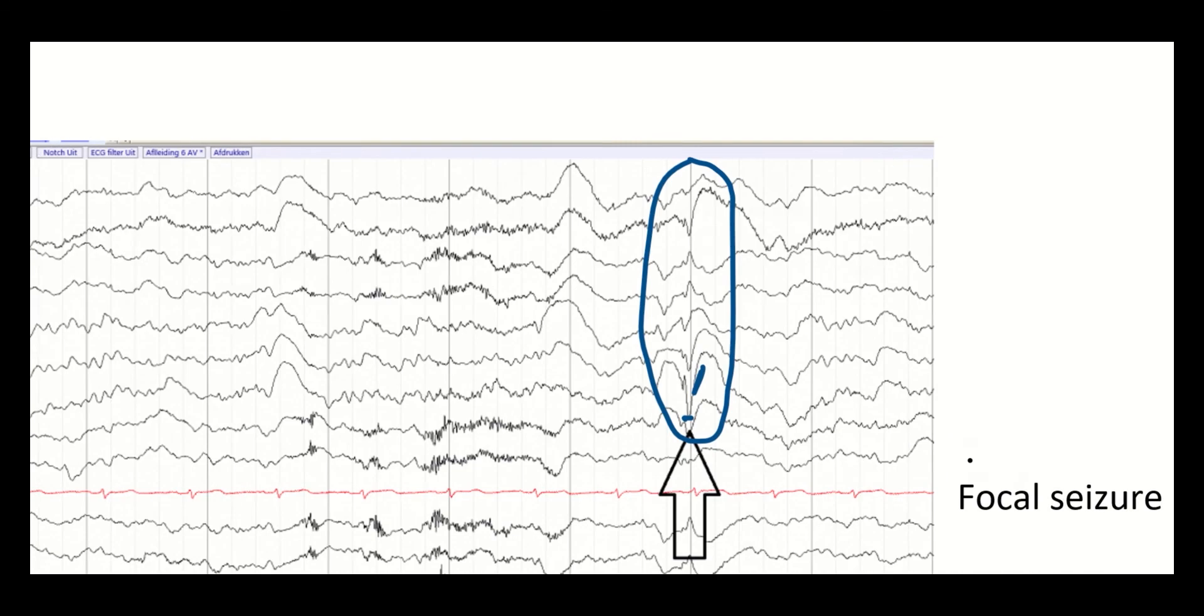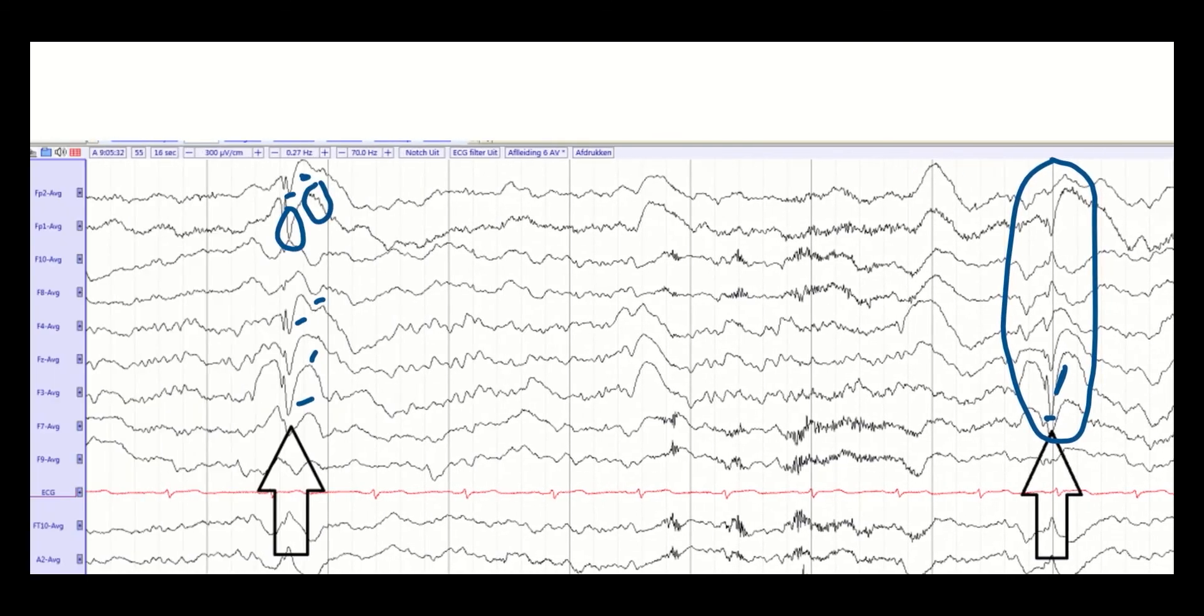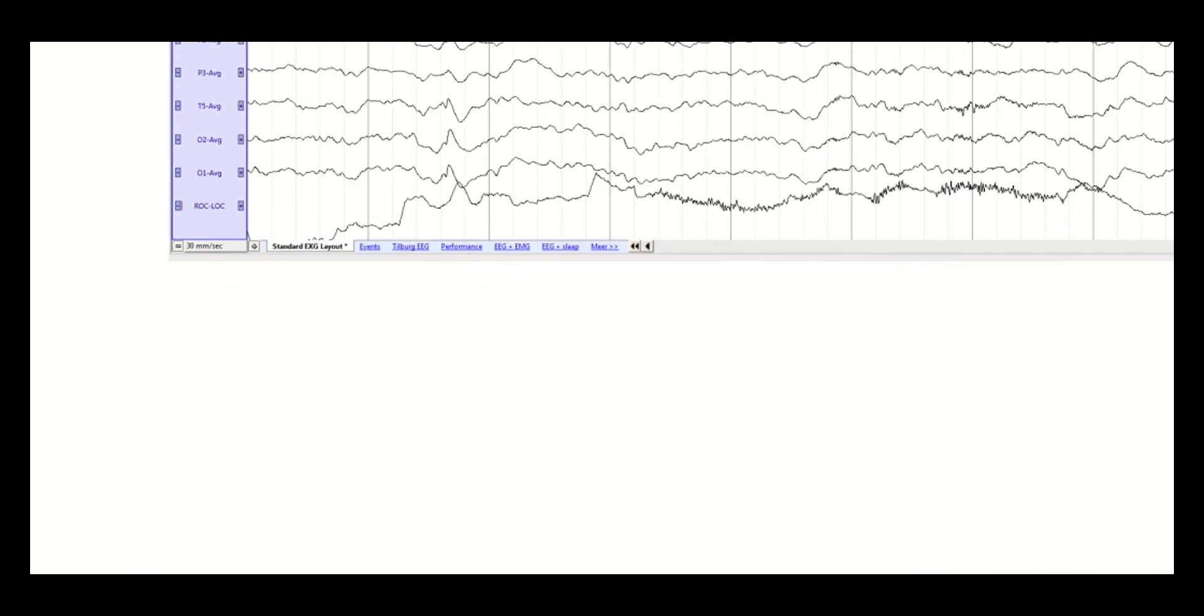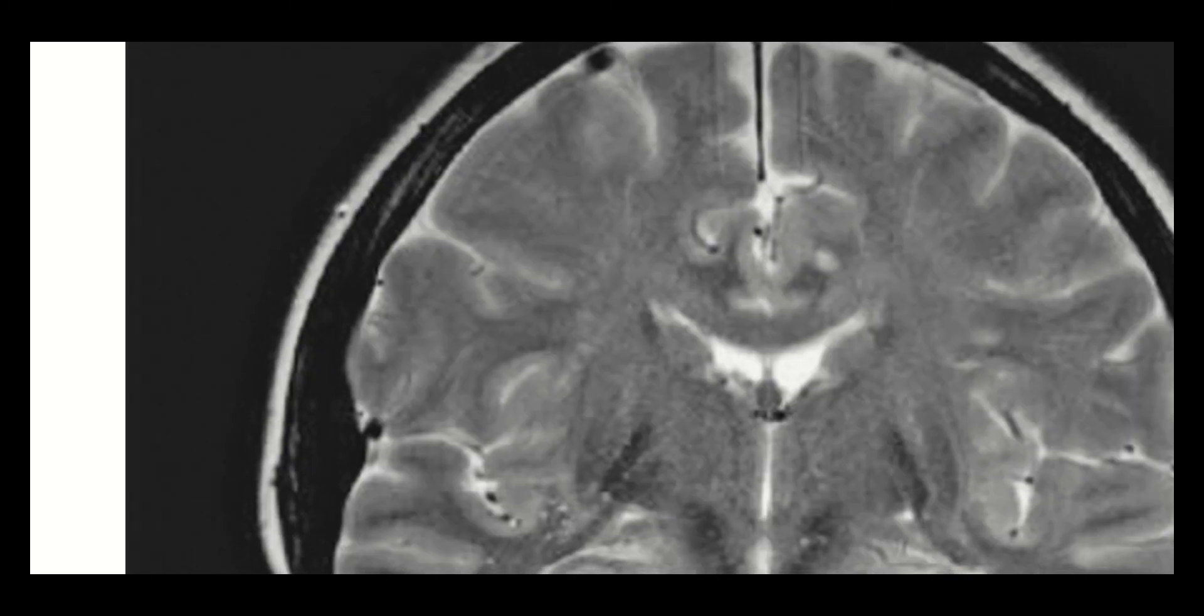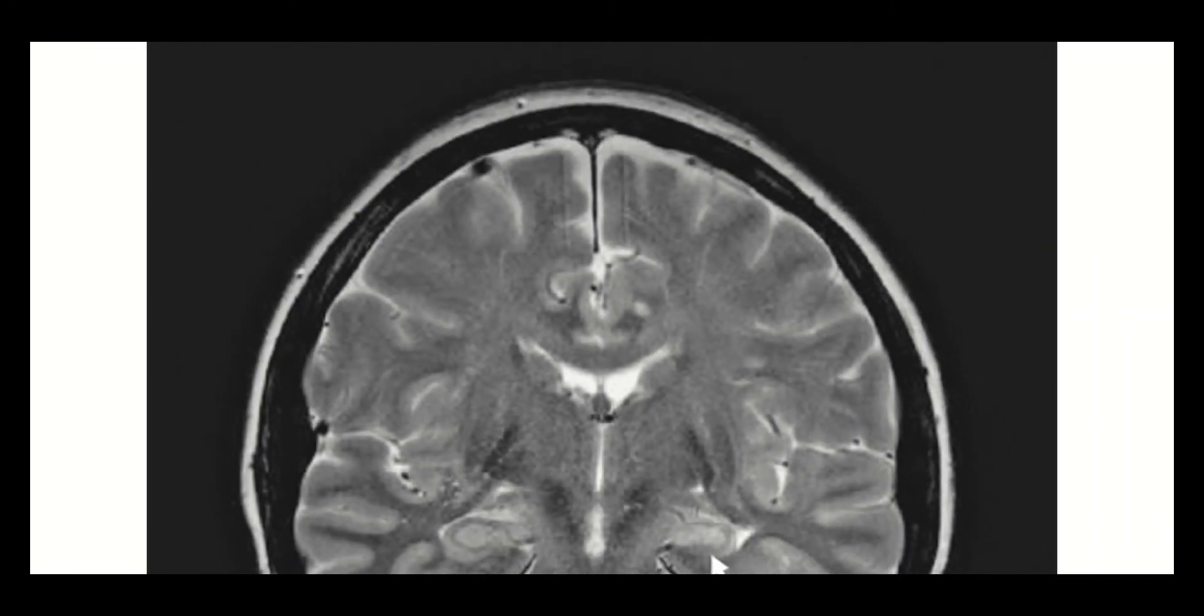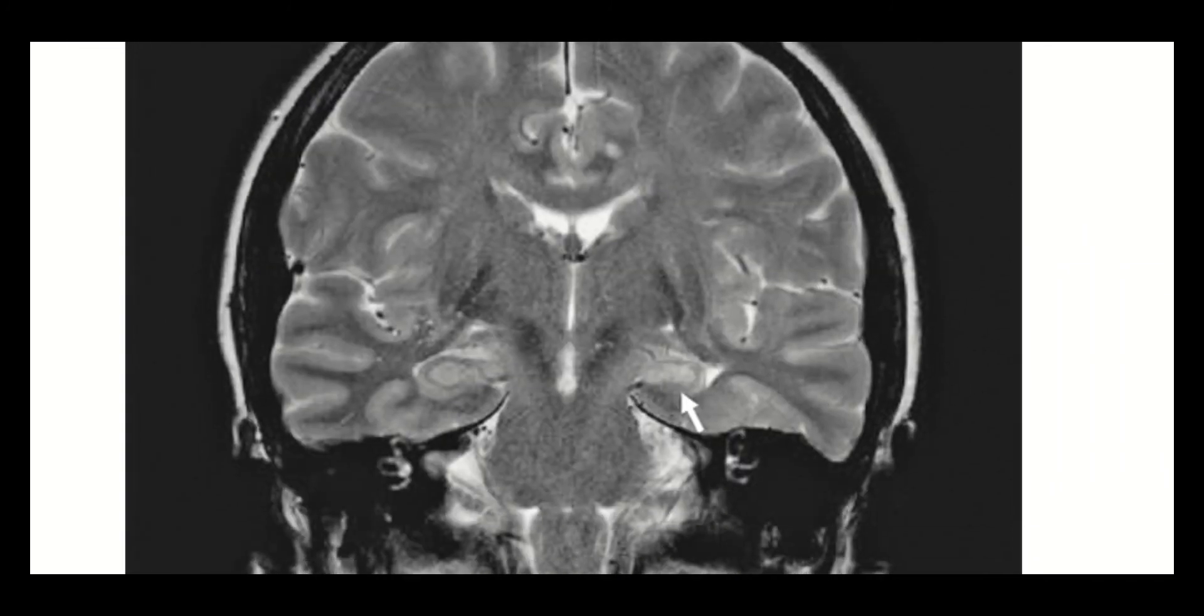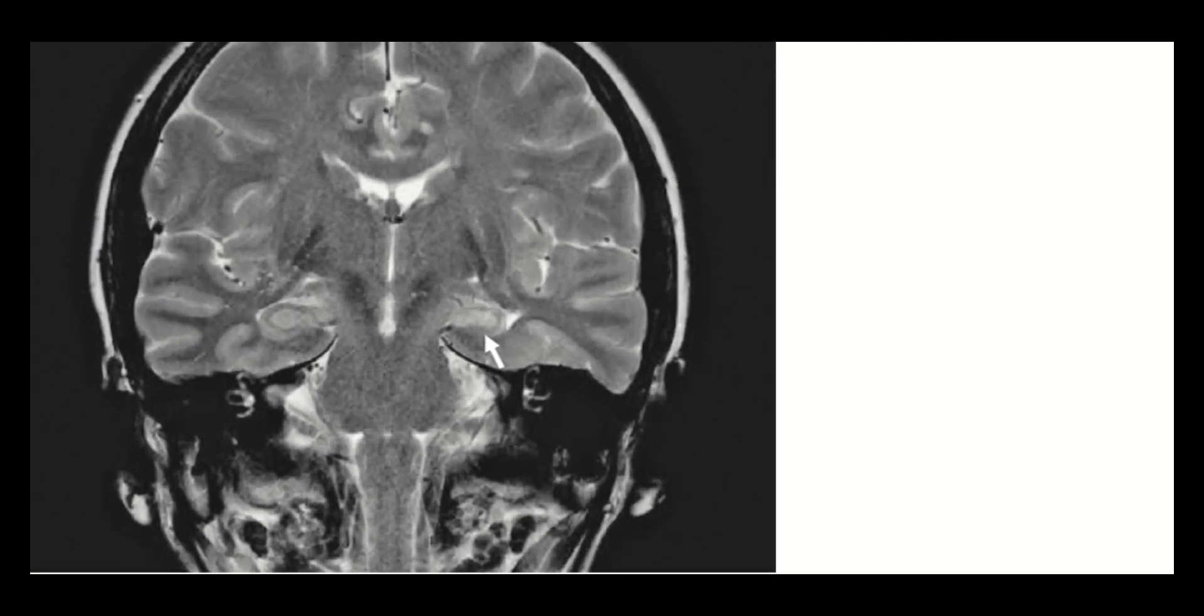Last of all, we have this MRI. This image has been taken from Harrison's. You can see that there is sclerosis in the hippocampus. This is the characteristic hippocampal sclerosis you will see in MTLE, mesial temporal lobe epilepsy, and this is the pathognomonic structure as has been shown by the arrow. That is all. I hope this was useful. Thank you.